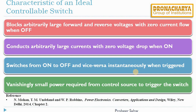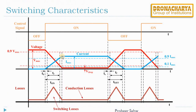We can see that these ideal characteristics are not followed by a practical switch. There will be certain current flowing through the switch even though it is off. There will be a certain voltage drop across the switch even though it is on. There will be certain delay in transition from on to off state and vice versa, and a considerable amount of power will be drawn from the control source. This is explained in the switching characteristics.